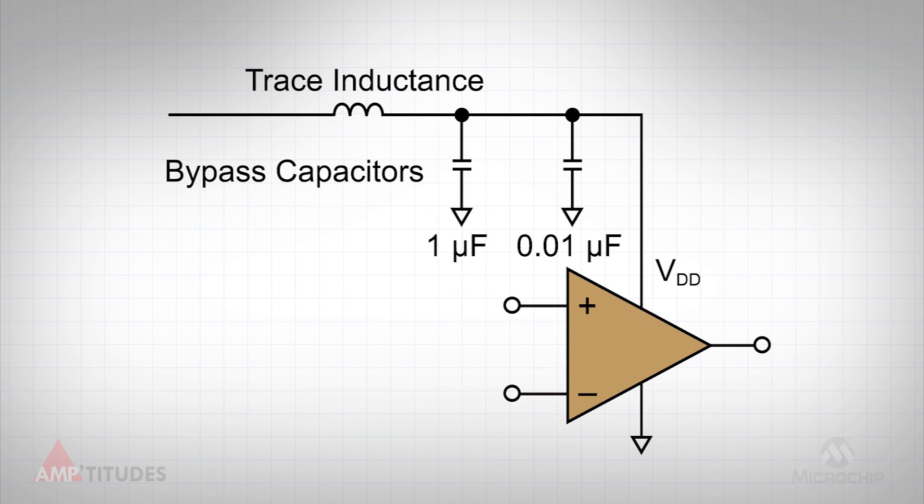If the nature of the noise is broadband, meaning spanning a wide frequency range, then it may be necessary to use multiple bypass capacitors of different values in parallel, to provide adequate filtering across a wider frequency range.